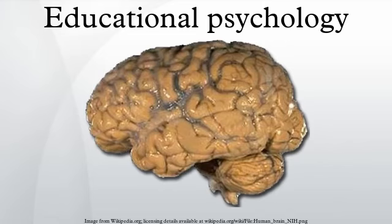Educational psychology can in part be understood through its relationship with other disciplines. It is informed primarily by psychology, bearing a relationship to that discipline analogous to the relationship between medicine and biology. It is also informed by neuroscience. Educational psychology in turn informs a wide range of specialties within educational studies, including instructional design, educational technology, curriculum development, organizational learning, special education, and classroom management. Educational psychology both draws from and contributes to cognitive science and the learning sciences. In universities, departments of educational psychology are usually housed within faculties of education, possibly accounting for the lack of representation of educational psychology content in introductory psychology textbooks.